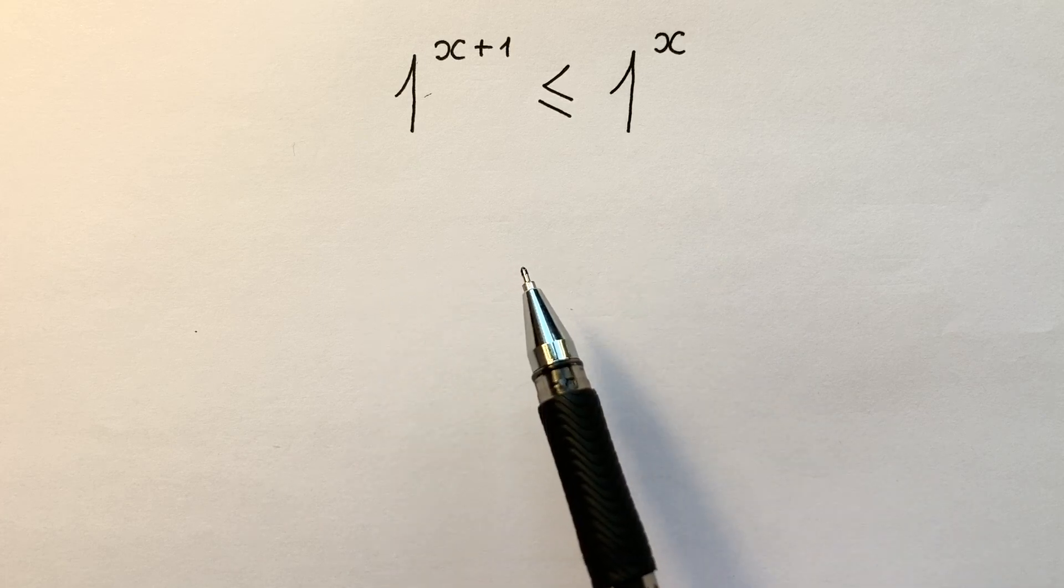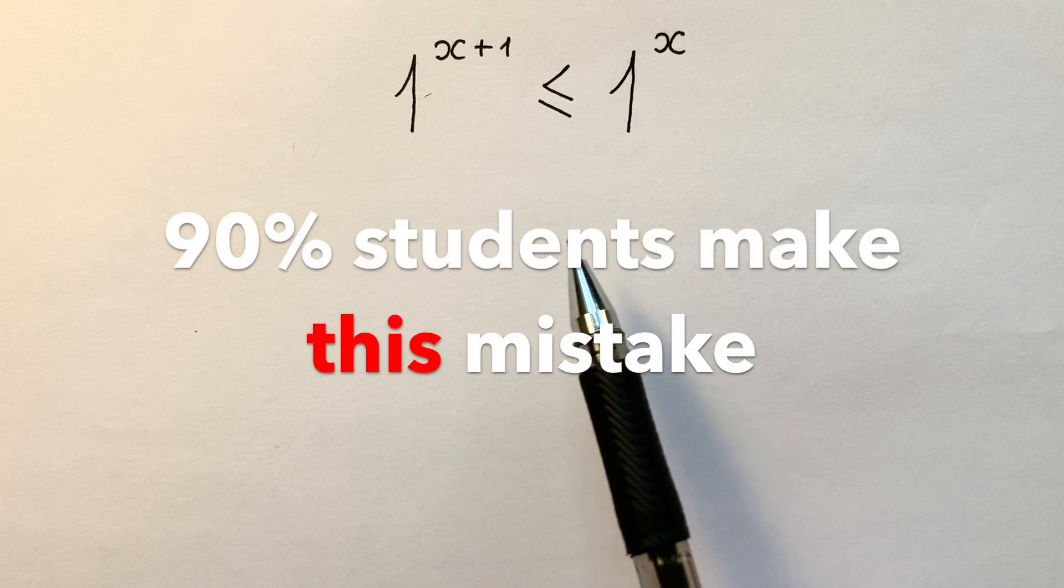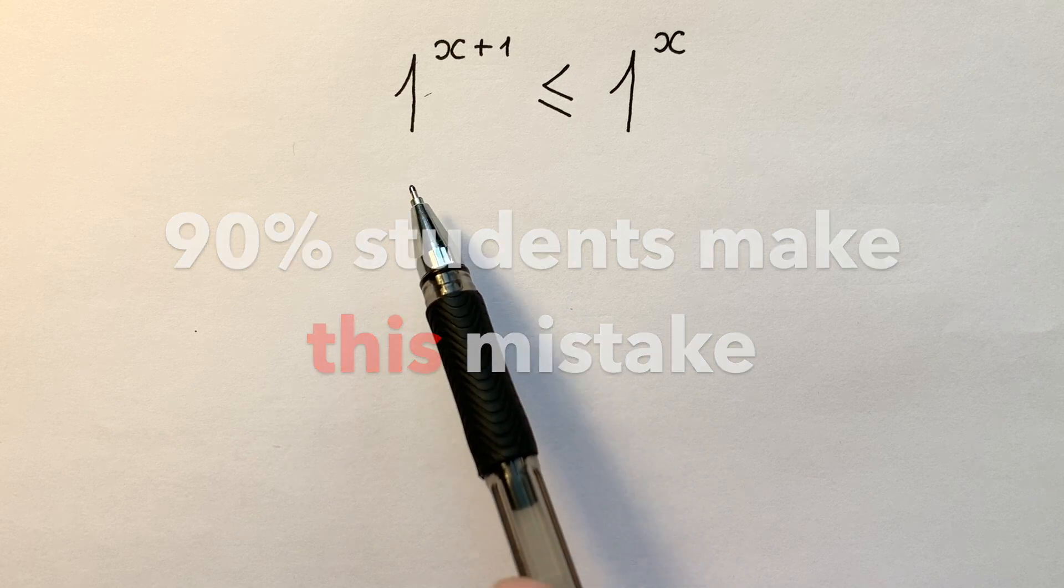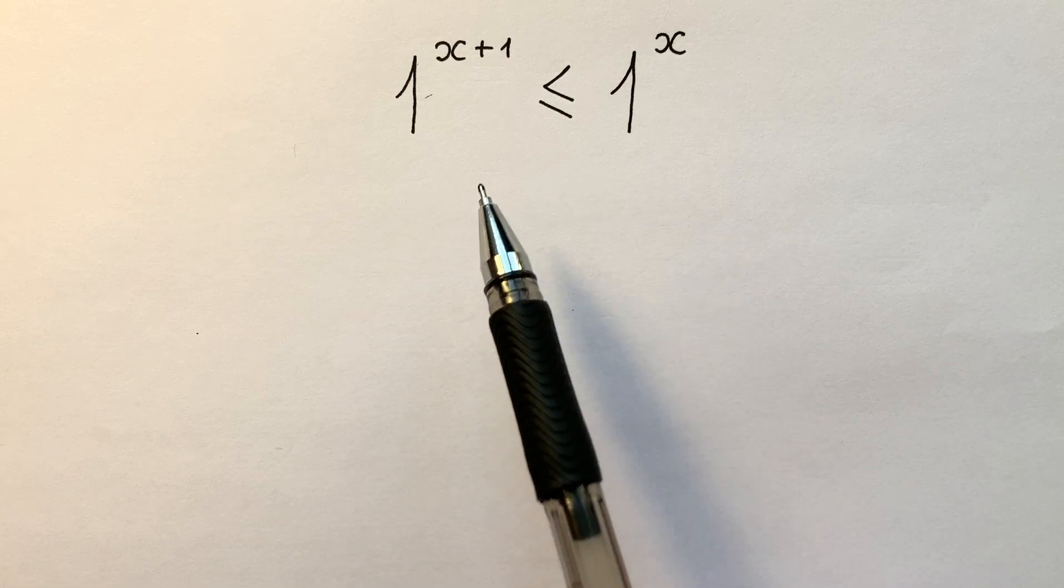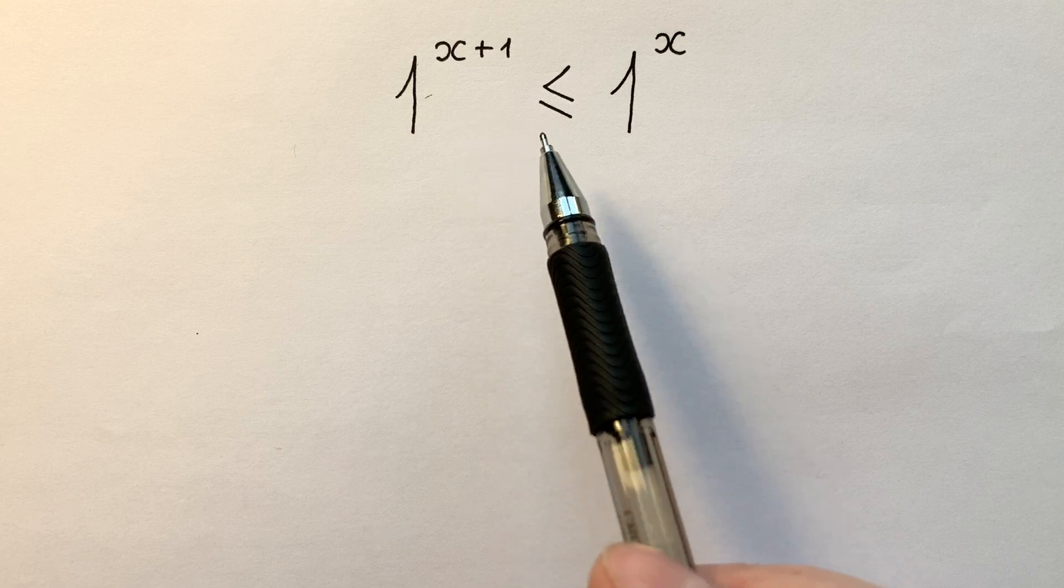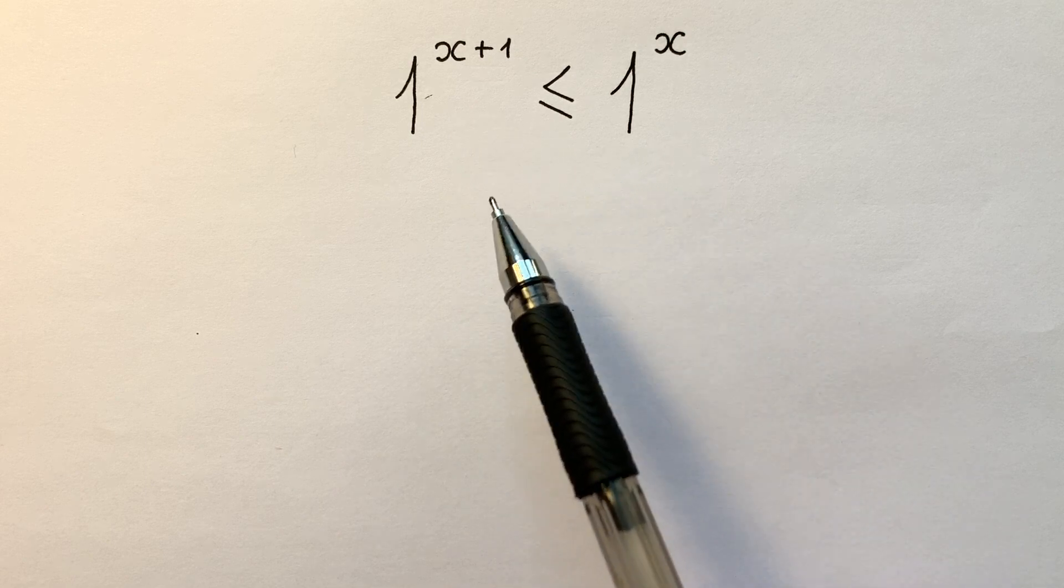There is one common mistake that's clearly seen in 90% of students trying to solve this inequality. They say if 1 to the power of x plus 1 is less or equal to 1 to the power of x...